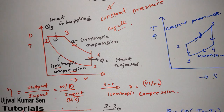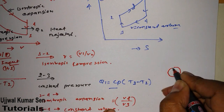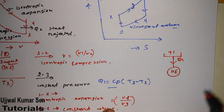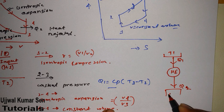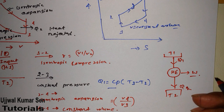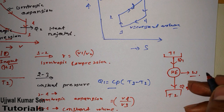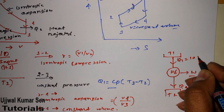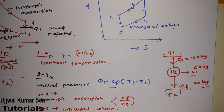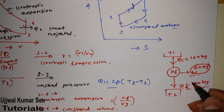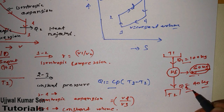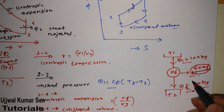Consider a heat engine where Q1 heat is supplied and Q2 is rejected, and work is done. For example, if Q1 is 100 kJ and Q2 is 40 kJ, then work done is 60 kJ. Work done is simply heat supplied minus heat rejected.